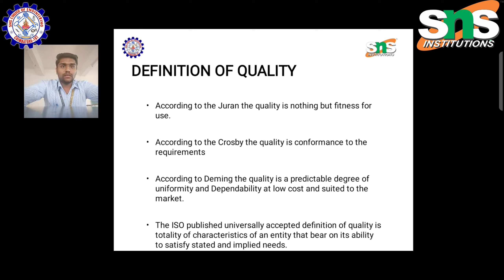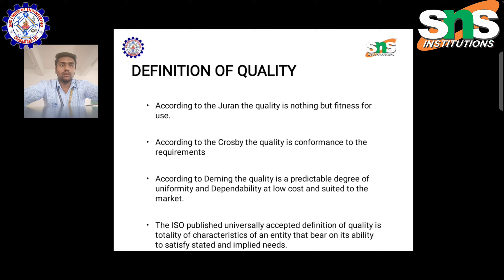While talking about the definition of quality: according to Juran, quality is fitness for use; according to Crosby, quality is conformance to requirements; according to Deming, quality is a predictable degree of uniformity and dependability at low cost and suited to the market. ISO's universally accepted definition is: totality of characteristics of an entity that bear on its ability to satisfy stated and implied needs. Simply put, a product or process must achieve the goal it was intended to produce — that is quality. A product that can pursue its intended application and usage can also be said to have quality.